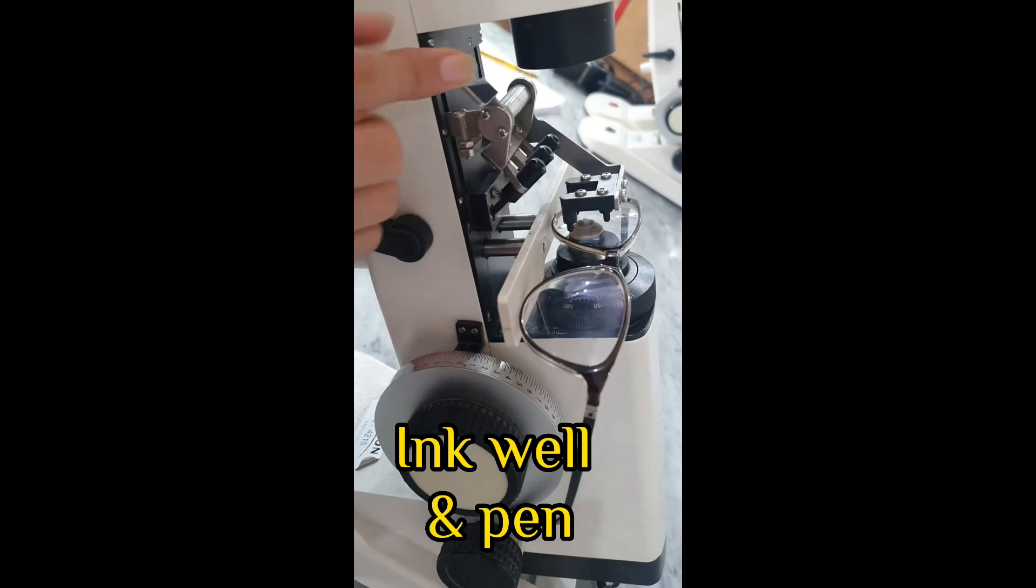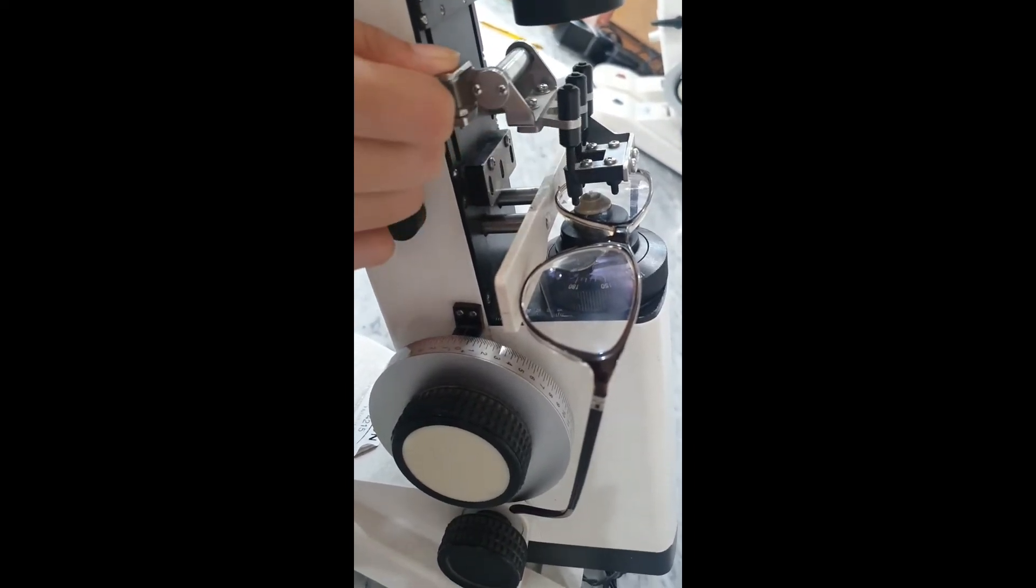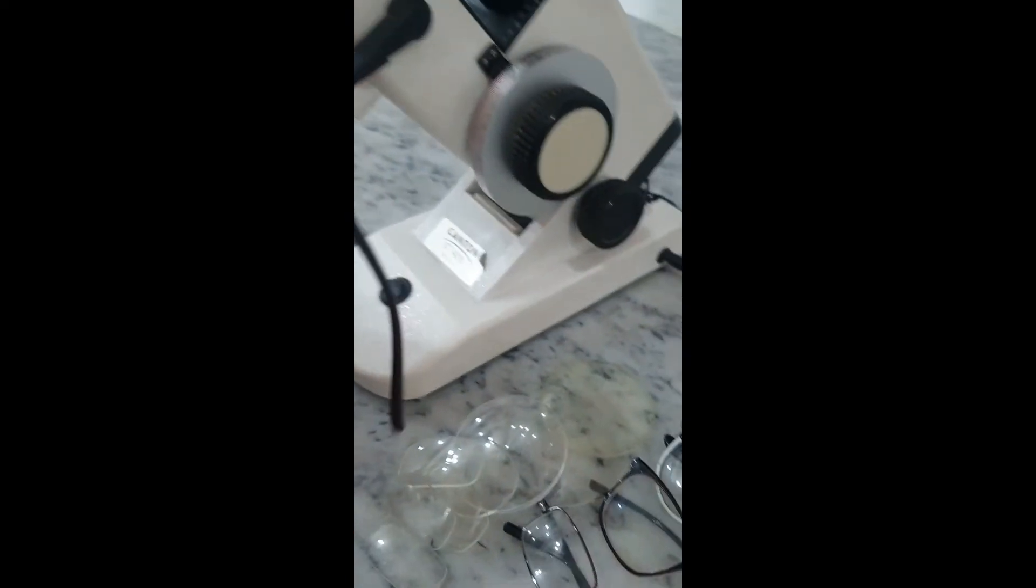Inkwell and pen for dotting the optical center of the lens. Optical center vary from patient to patient. So, different lenses have different OC. This is the marked OC of a sample lens.